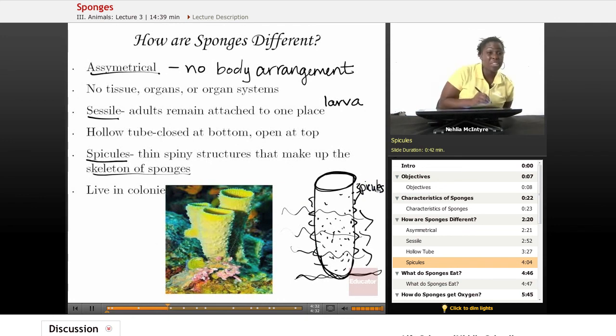Lastly, sponges live in colonies, like little families of sponges. They live together. Here's a colony of three sponges and maybe actually four in this picture here.